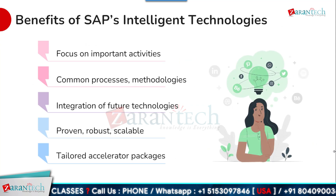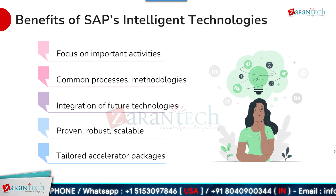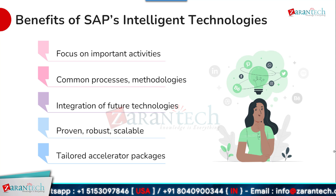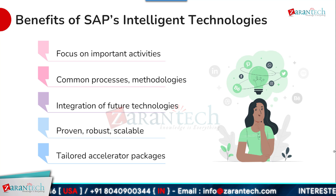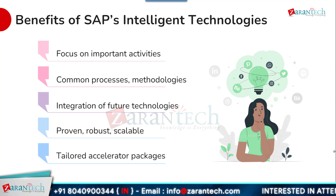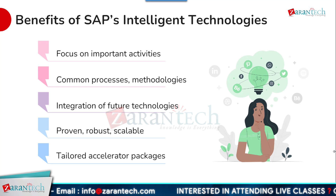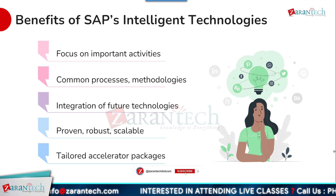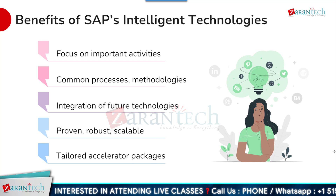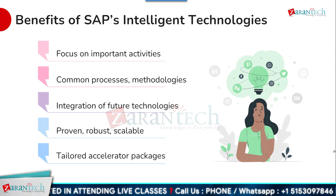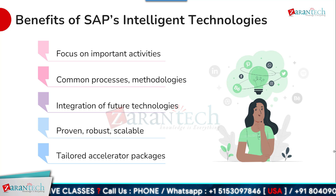Let us dive into the benefits of SAP's intelligent technologies in SAP Digital Transformation. SAP's intelligent technologies offer a range of benefits for organizations. They enable employees to focus on important activities by automating routine tasks. SAP's technologies provide common processes and methodologies, ensuring consistency across the organization. They integrate future technologies like IoT and AI, enabling organizations to stay ahead of the curve. SAP's technologies are proven, robust, and scalable, ensuring reliable performance. And finally, SAP offers tailored accelerator packages that enable organizations to quickly adapt and benefit from intelligent technologies.